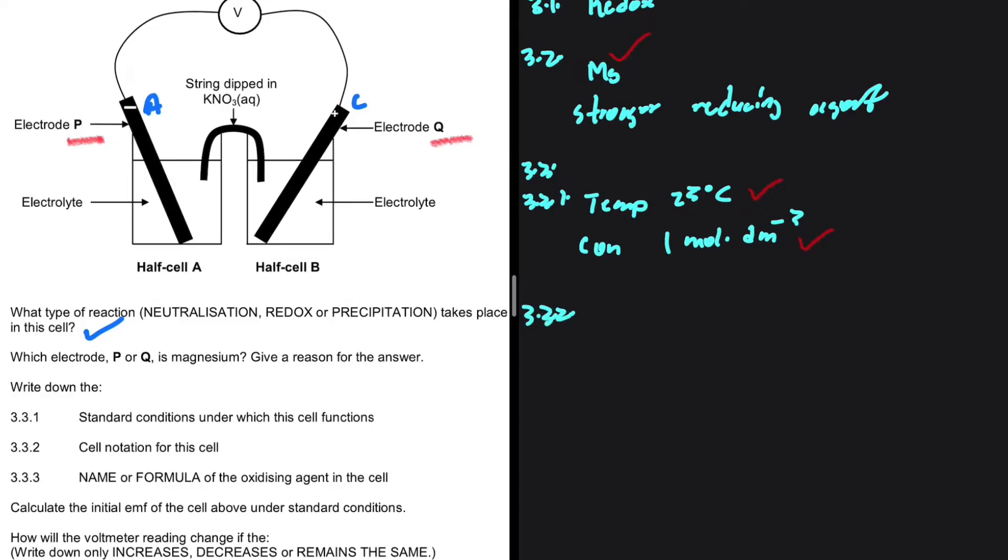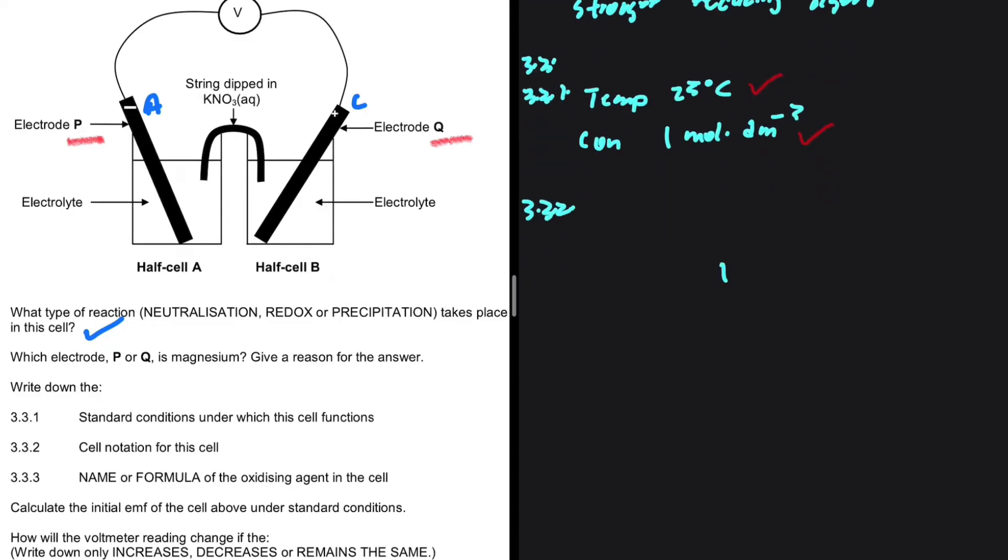3.2. We're supposed to write the cell notation for this cell. As soon as the question says cell notation, salt bridge, and then I can start thinking about all the other things. We know fully well that we're going to have the anode at the left-hand side and the cathode at the right-hand side.